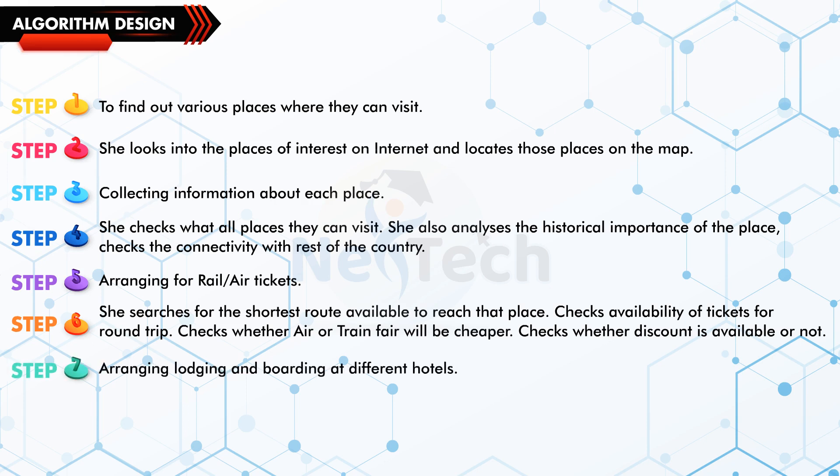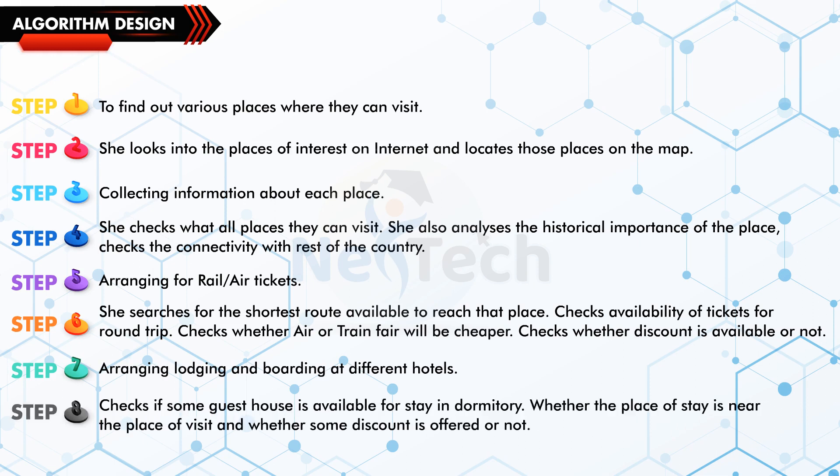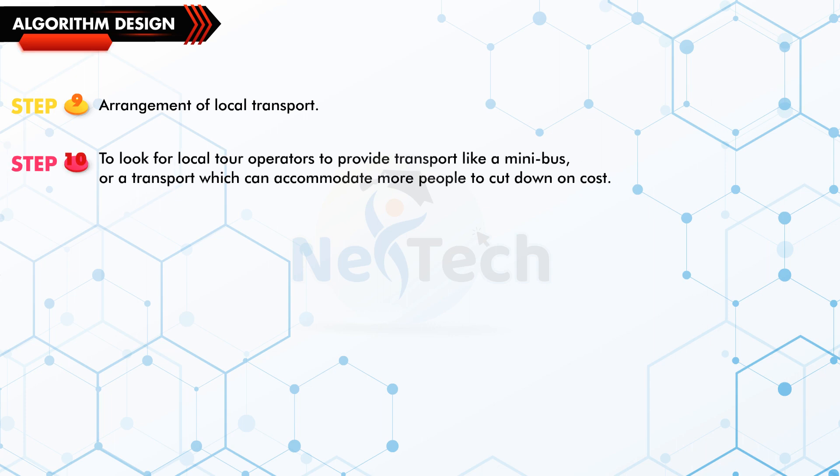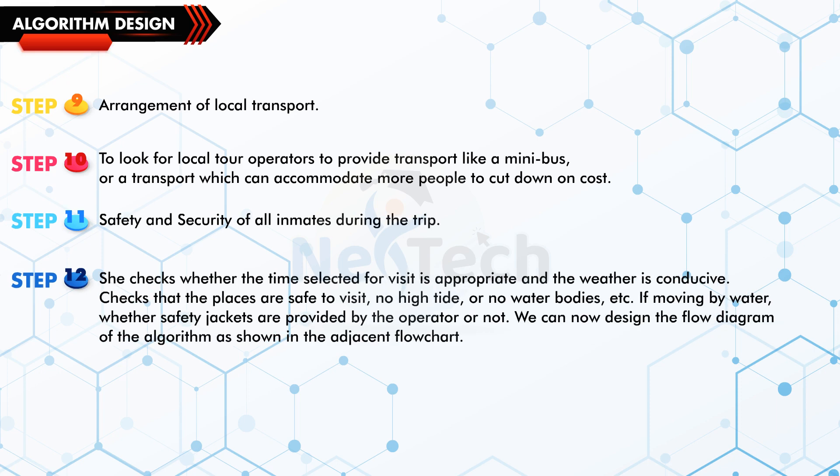Step 7: Arranging lodging and boarding at different hotels. Step 8: Checks if some guest house is available for stay in dormitory. Whether the place of stay is near the place of visit and whether some discount is offered or not. Step 9: Arrangement of local transport.